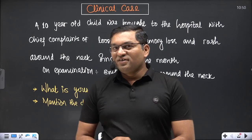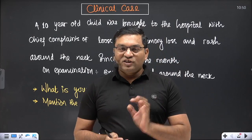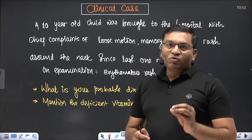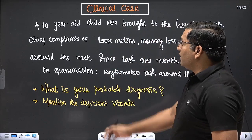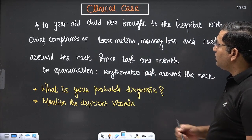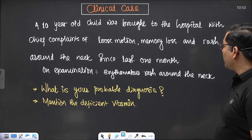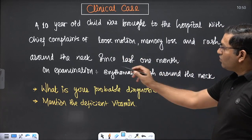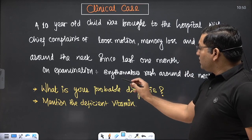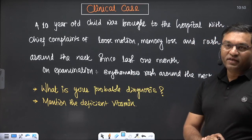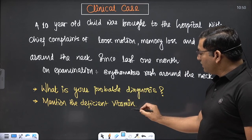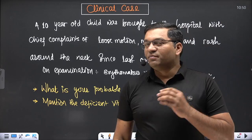This is an early clinical exposure case series. A 10-year-old child was brought to the hospital with chief complaints of loose motions, memory loss, and a rash around the neck since the last one month. On examination, an erythematous rash was found around the neck. What is your probable diagnosis, and which vitamin is deficient? This is a vitamin deficiency case.